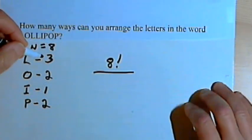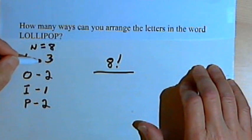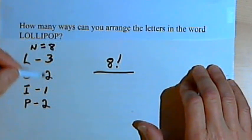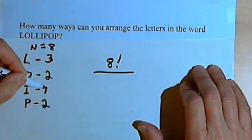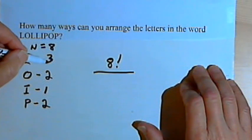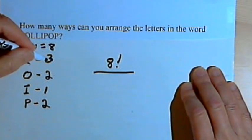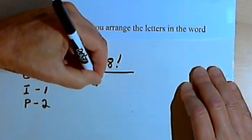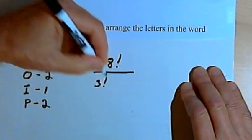In the denominator, we take, for each of the elements that repeats, we take the number of times it repeats and we get the factorial of that number. So the L repeats three times. That means in the denominator, I want 3 factorial.